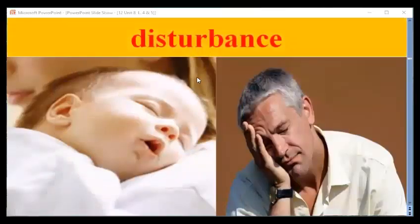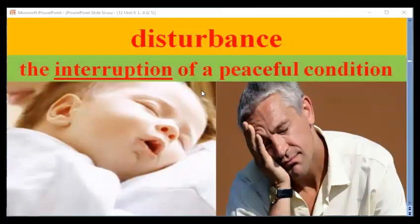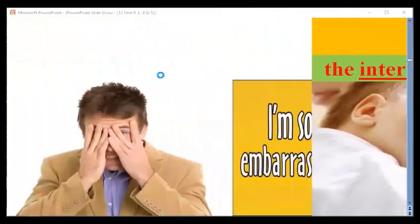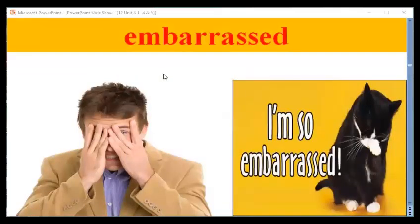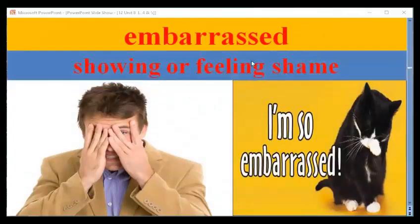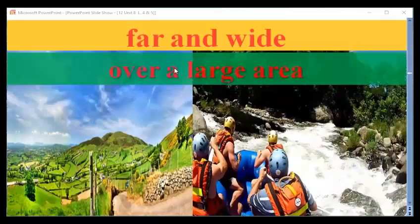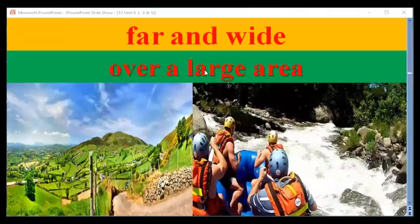The next one is 'disturbance' — the interruption of a peaceful condition. Have a look at the pictures. Next we have 'embarrassed,' meaning showing or feeling shame. And here we have 'far and wide,' meaning over a large area.